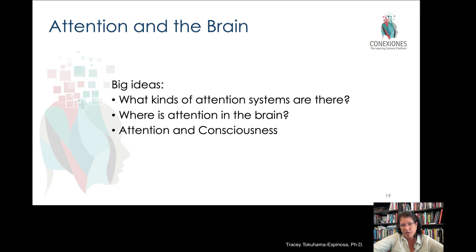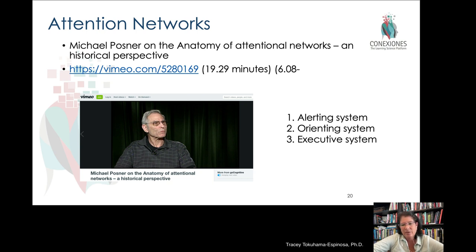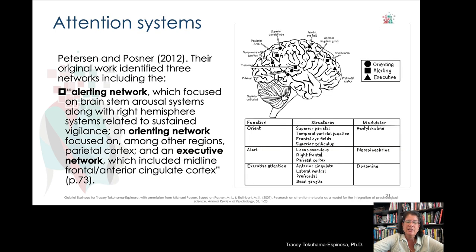Perhaps the biggest name in this field is Michael Posner. He has been studying attention networks in the brain for 30 to 40 years and is a real genius in this area. He pinpoints three main systems: the alerting system, the orienting system, and the executive system of attention, which are quite distinct in the brain. They are different neural networks, involving different hubs and different neural chemicals — different neurotransmitters — and these alerting, orienting, and executive networks serve different functions.